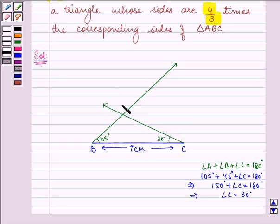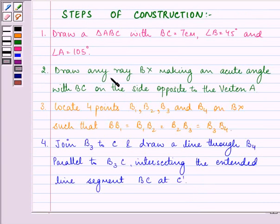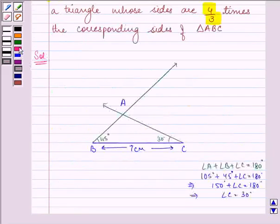So this point will be A. Now the second step is to draw any ray BX making an acute angle with BC on the side opposite to vertex A. Now we have a ray BX which is opposite to the vertex A.